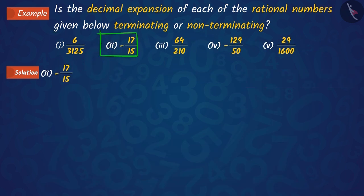Let us now discuss the second rational number, 17 upon 15. After analyzing it, we see that the denominator is not in the form of 2 raised to n into 5 raised to m.